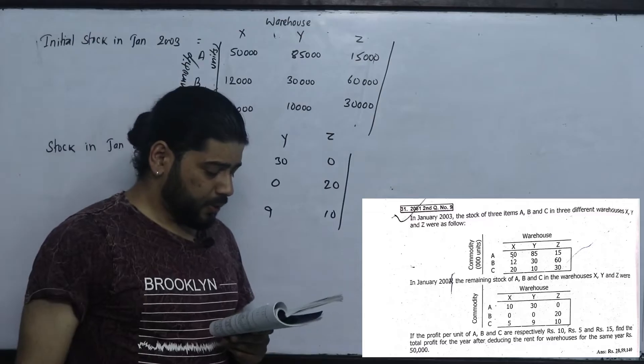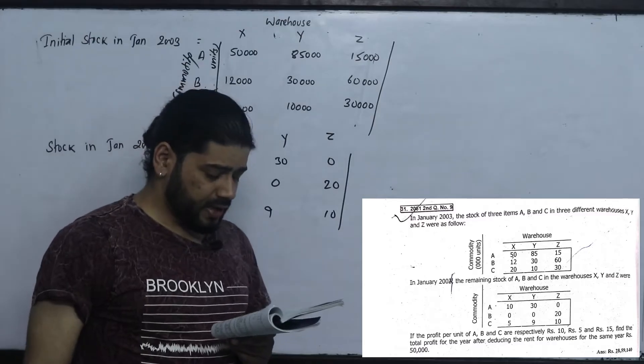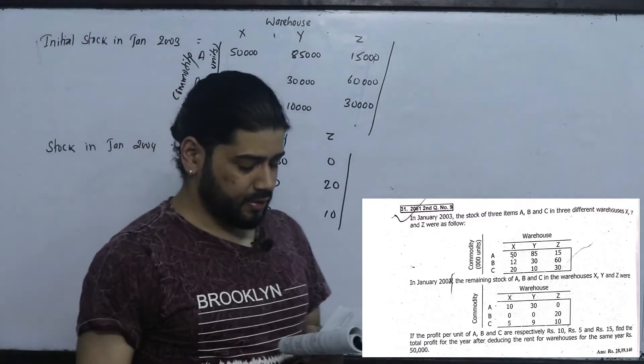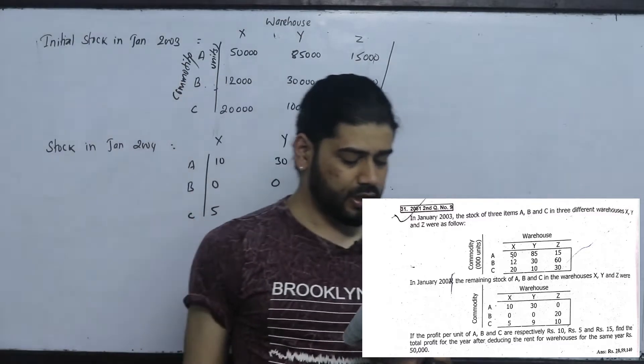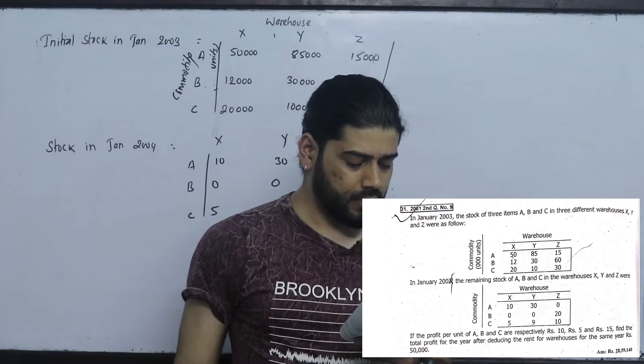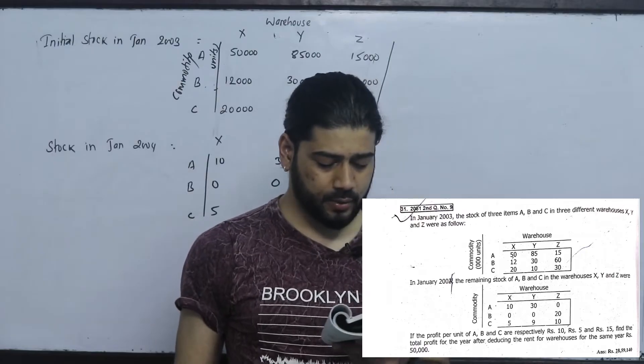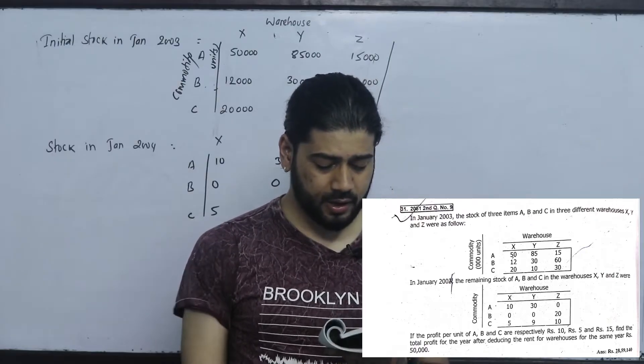If the profit per unit of A, B, C respectively is 10, 5, and 15, find the total profit for the year after deducting the rent for the warehouses for the same year.